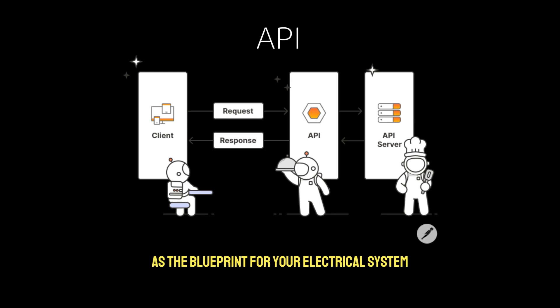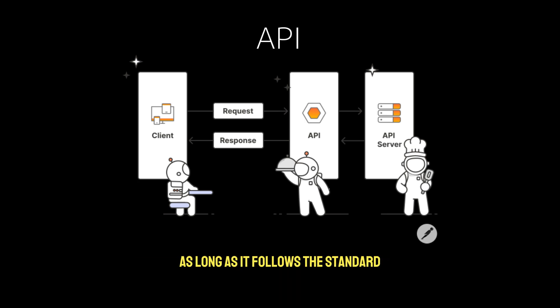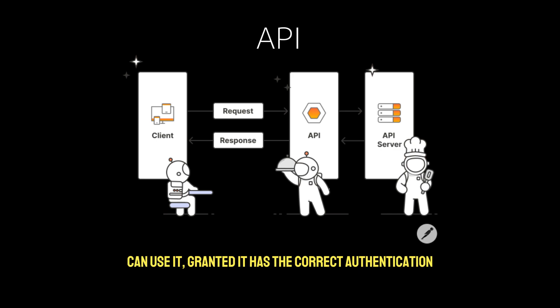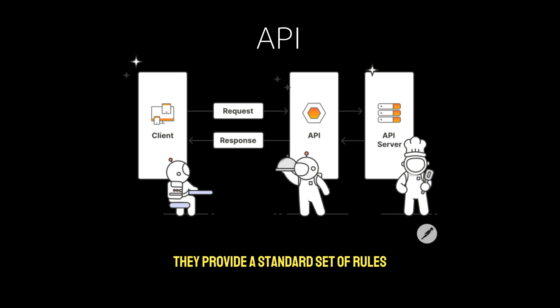Imagine an API as the blueprint for your electrical system or telephone network. It's the specification, the set of rules and protocols that tell software how to communicate. Just like you can plug any device into the electrical wiring in your house as long as it follows the standard, anything that understands an API's specification can use it, granted it has the correct authentication. APIs are universal connectors enabling different systems and services to talk to each other, providing a standard set of rules for communication between software.